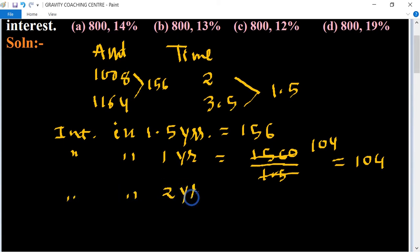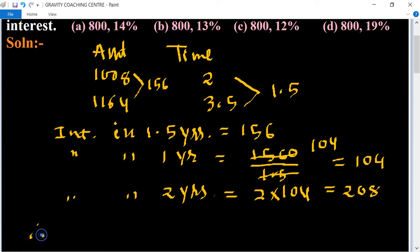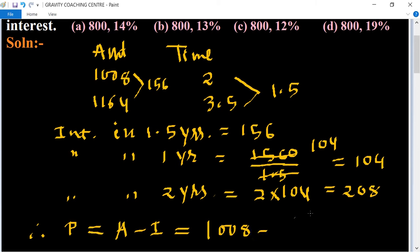Interest for two years equals 2 × 104 = rupees 208. Therefore, principal equals amount minus interest. Amount for two years is rupees 1008, minus two-year interest of rupees 208, equals rupees 800. So rupees 800 is the principal.